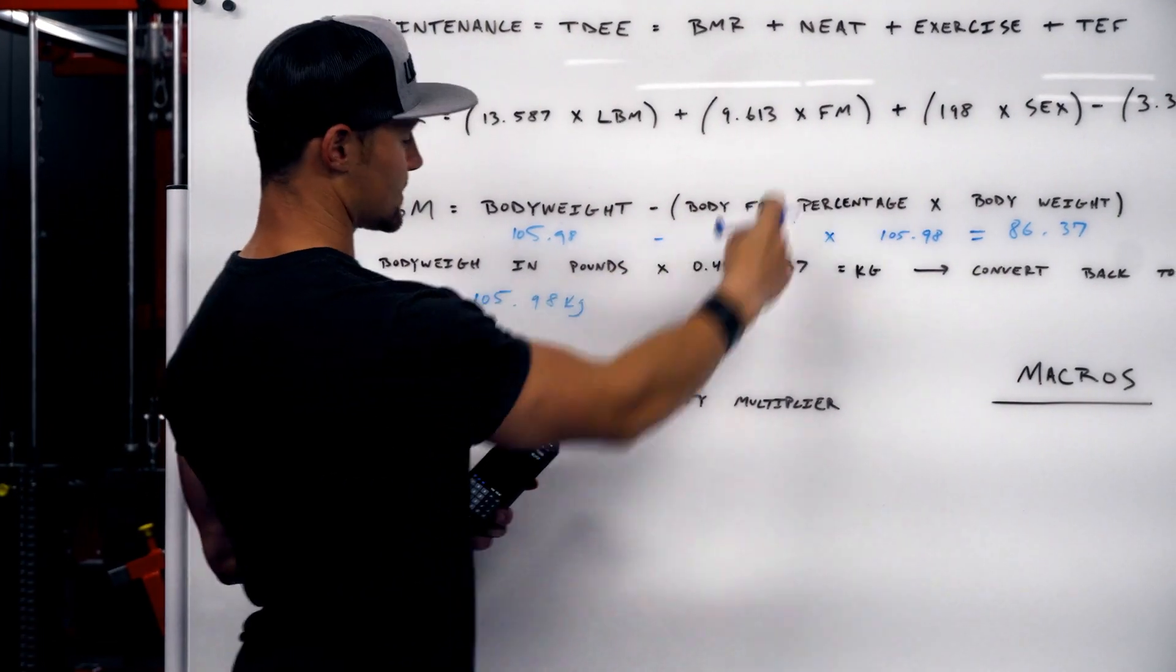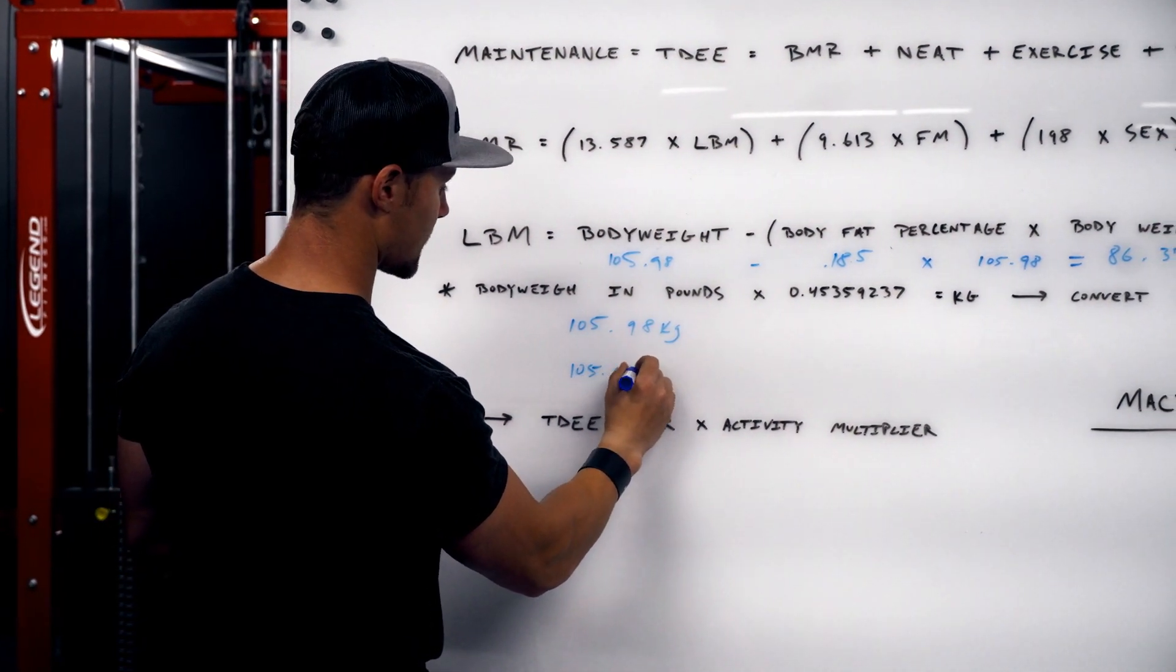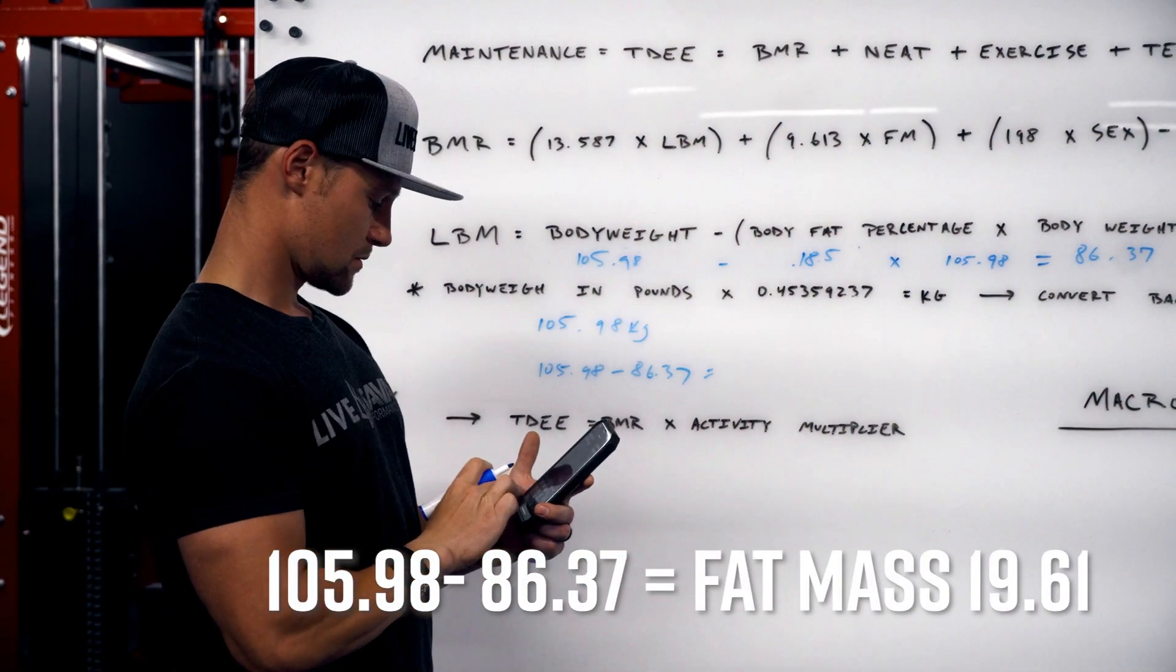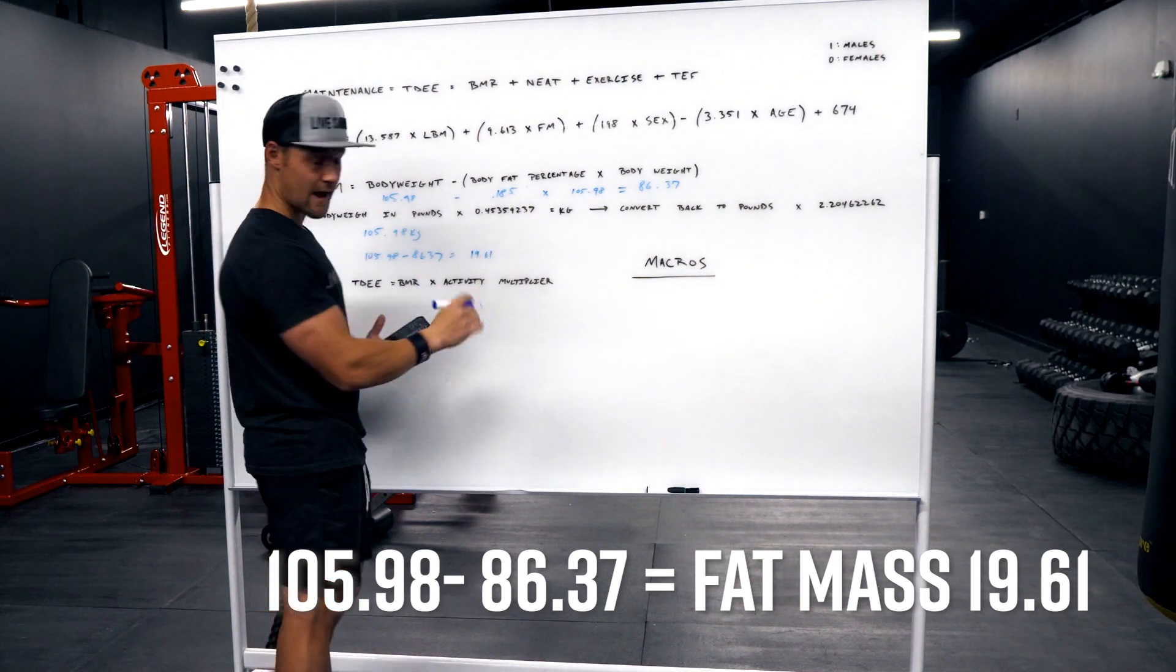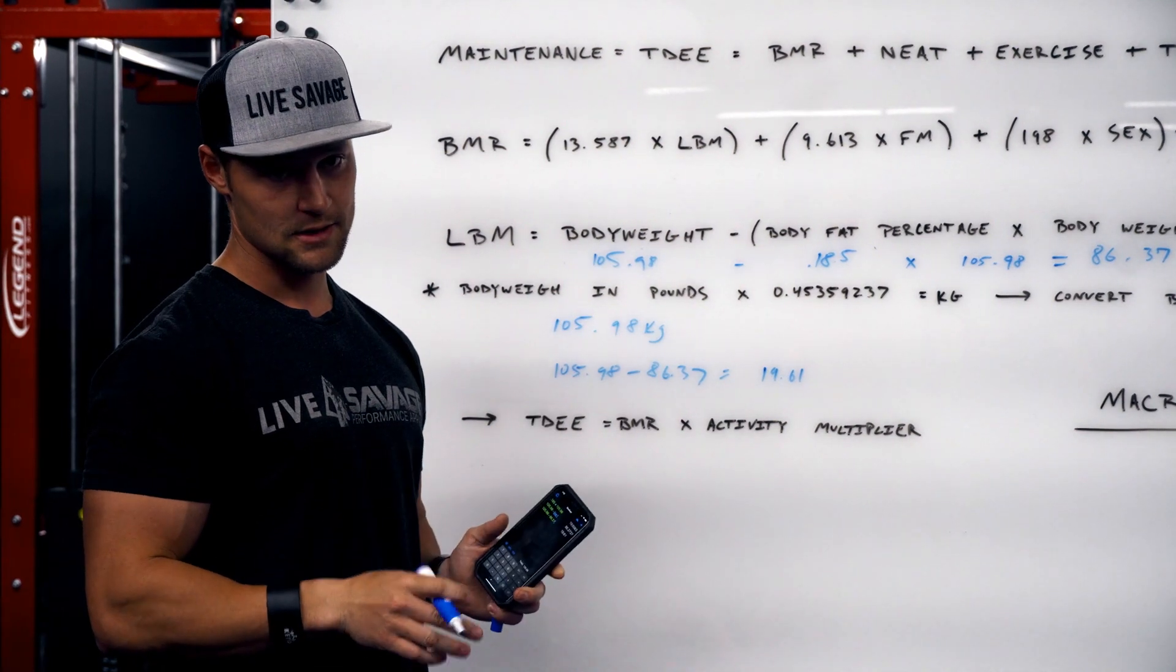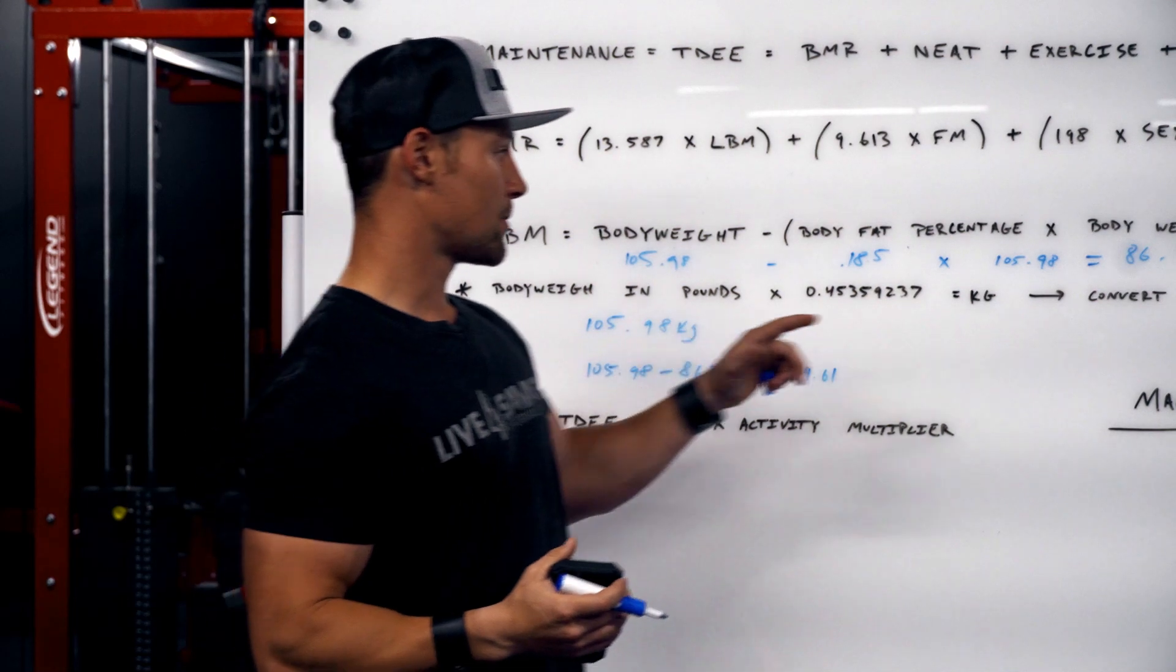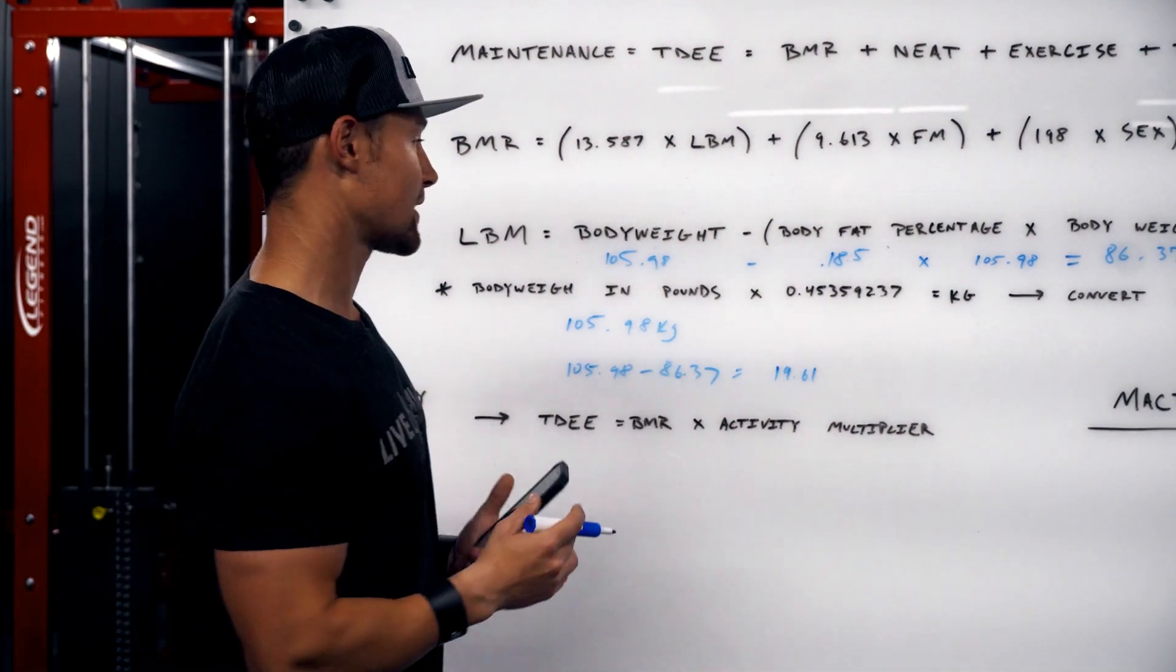So we'll swap that in right there. 105.98 minus the body fat, and we're going to do that as a decimal. So we'll just do 0.185 times the body weight, which again is 105.98. So this is going to give us a lean body mass of 86.37 kilograms. So now we know this number right here. We need to also know fat mass. Fat mass is going to be calculated by simply taking our total mass, 105.98, subtracting our lean mass of 86.37, and that's going to give us 19.61 is our fat mass.